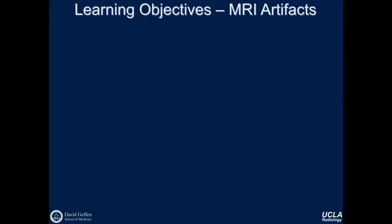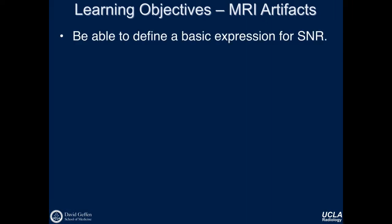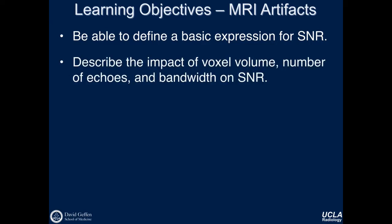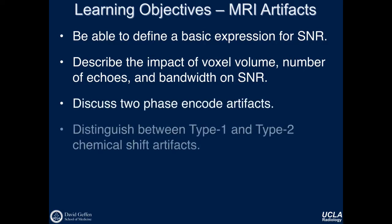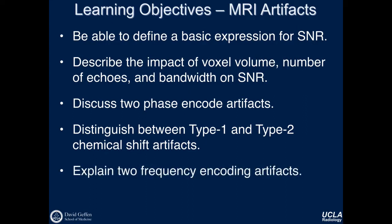At the end of this module, you should reach the following learning objectives: be able to define a basic expression for the signal-to-noise ratio; describe the impact of voxel volume, number of echoes, and bandwidth on the signal-to-noise ratio; discuss two phase-encode artifacts; distinguish between type 1 and type 2 chemical shift artifacts; and explain two frequency encoding artifacts.